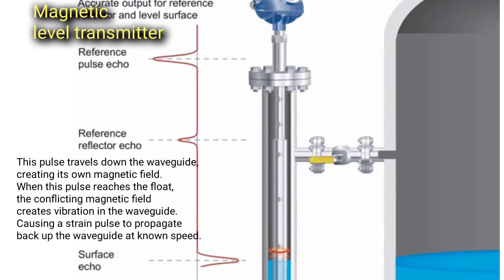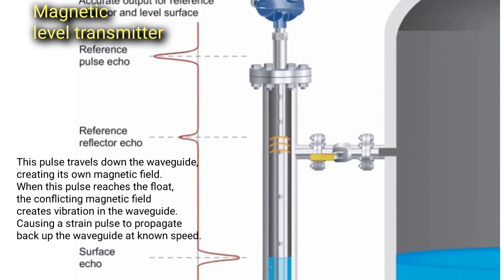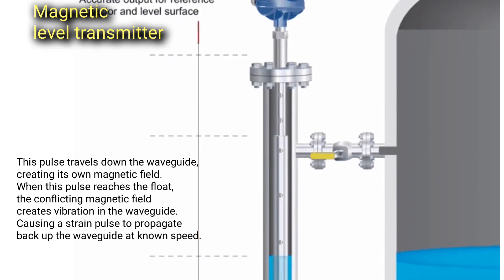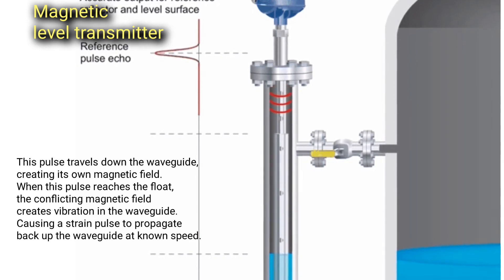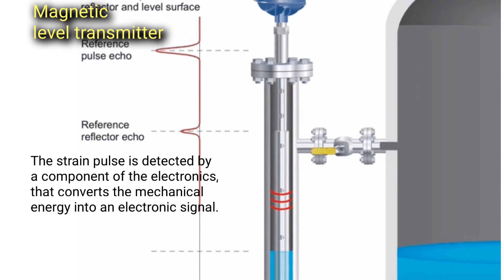This pulse travels down the waveguide, creating its own magnetic field. When this pulse reaches the float, the conflicting magnetic field creates vibration in the waveguide, causing a strain pulse to propagate back up the waveguide at known speed. The strain pulse is detected by a component of the electronics.